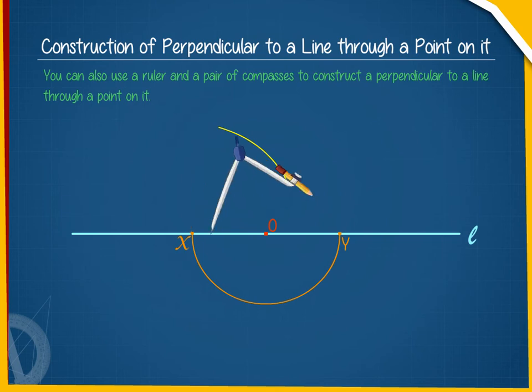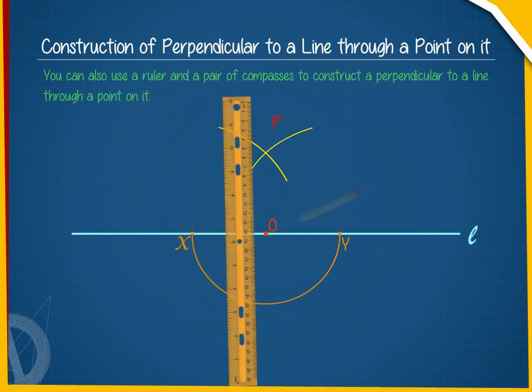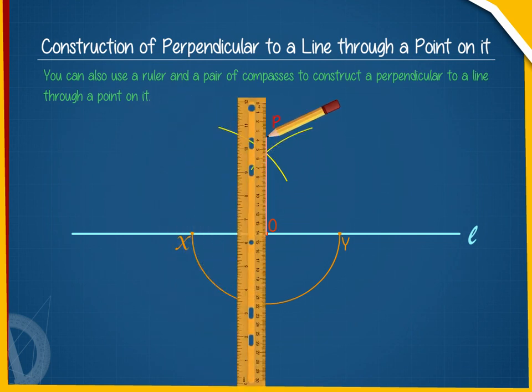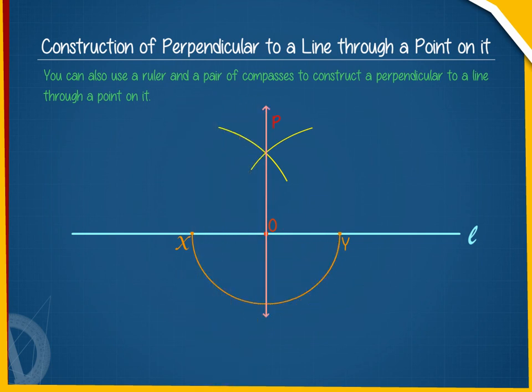Keeping Y as the center with the same radius as taken before, draw another arc, cutting the arc drawn previously at P as shown here. Join OP and extend it in both the directions to form the line OP as shown here. OP is the perpendicular line.